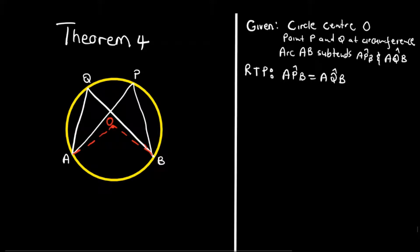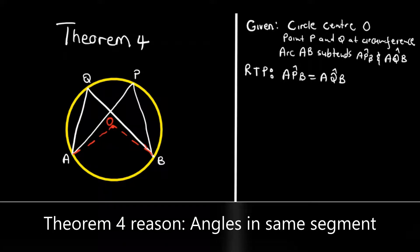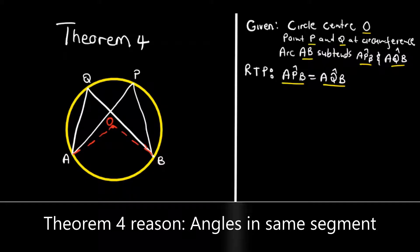Today we want to do Theorem 4. We are given a circle with center O, point P, and point Q at the circumference, and arc AB which subtends angle APB and angle AQB. You are required to prove that angle APB is equal to angle AQB — that is, these two angles are equal.